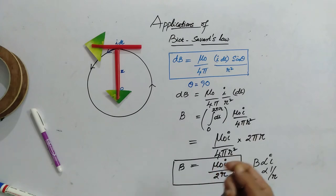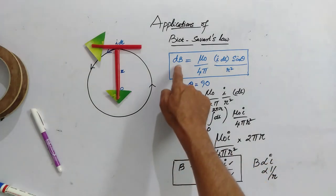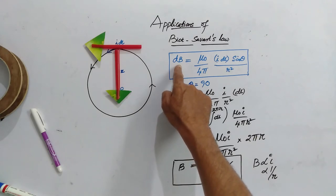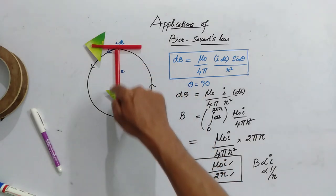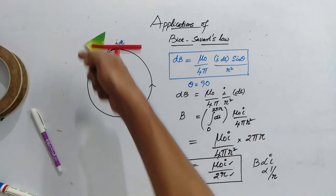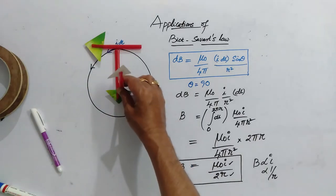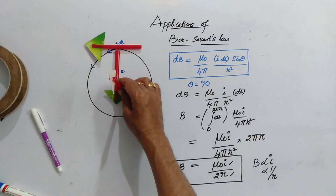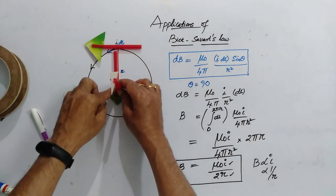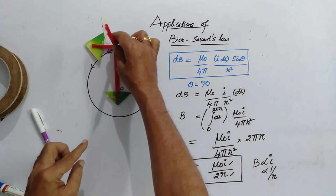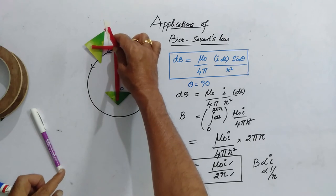If you write the vector form of Biot and Savart's law, you will get mu 0 by 4 pi ideal cross r. That means, the magnetic field must be perpendicular to this r vector and ideal vector. Here if it stands like this, this is perpendicular to this radius vector. At the same time, it is also perpendicular to this vector.